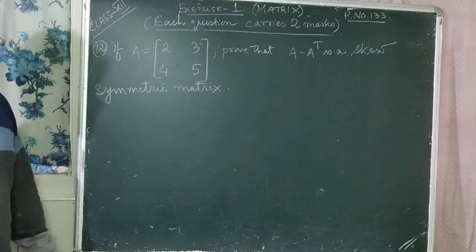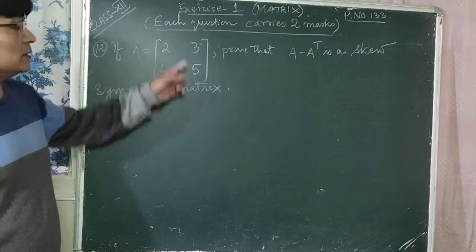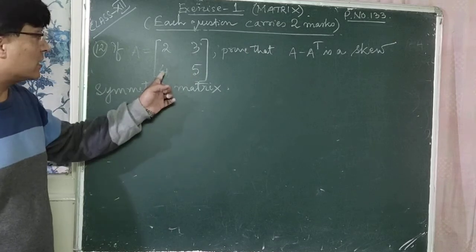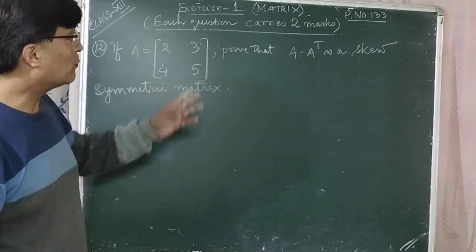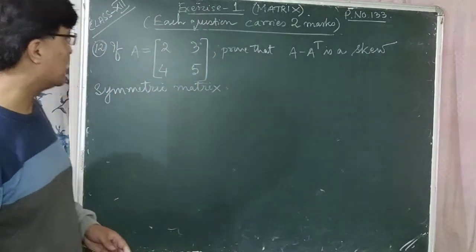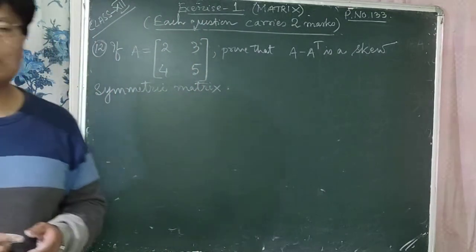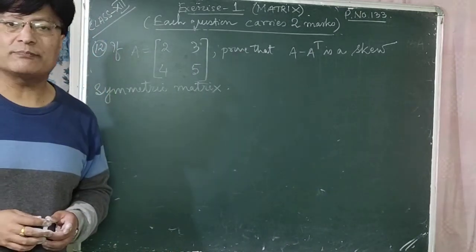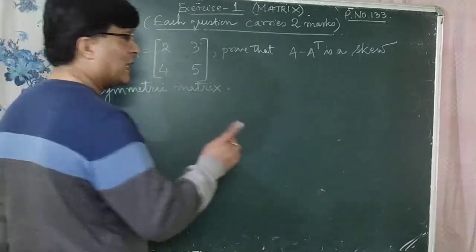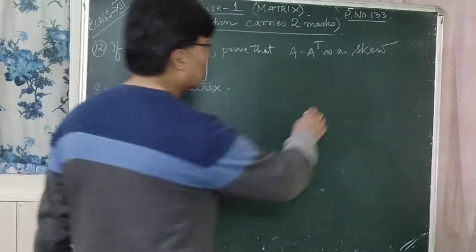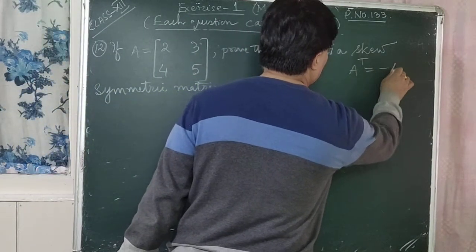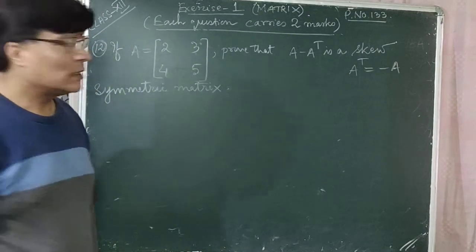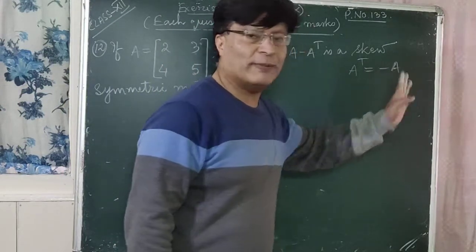Question number 12: if A is equal to [2,3; 4,5], prove that A minus A transpose is a skew symmetric matrix. A matrix A is said to be a skew symmetric matrix if A transpose is equal to minus A. Here, instead of A, we write A minus A transpose, and we need to prove that (A minus A transpose) whole transpose equals minus(A minus A transpose).